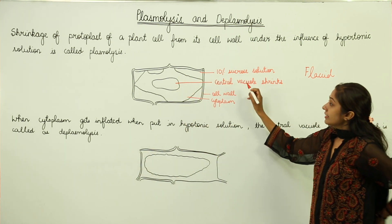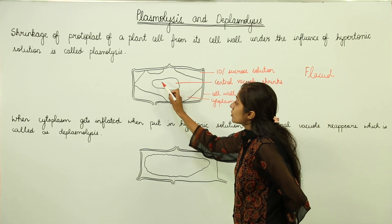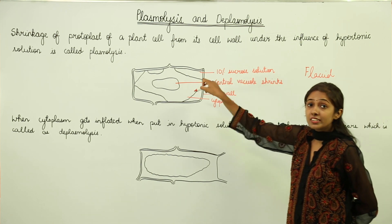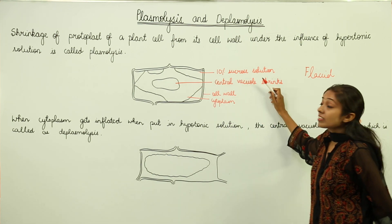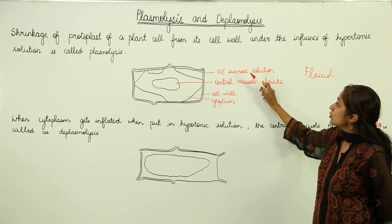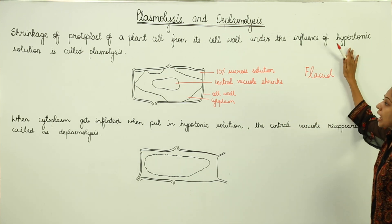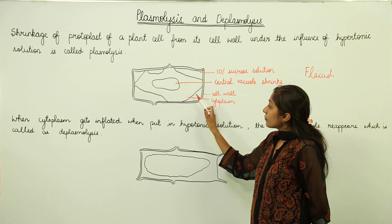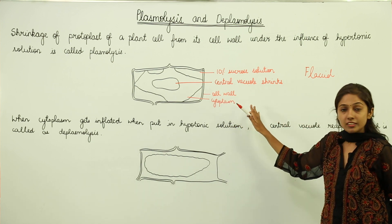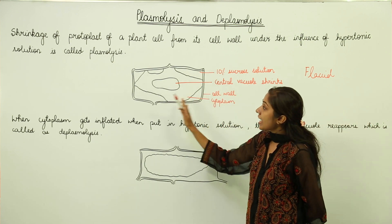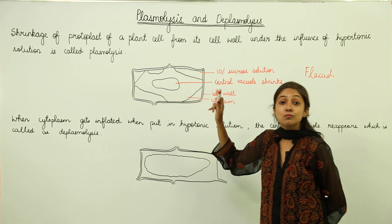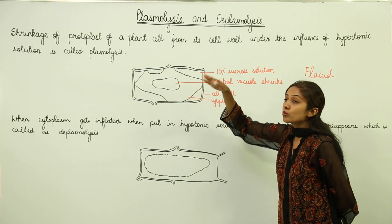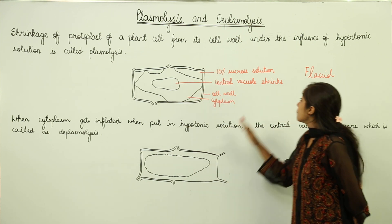You can see that the central vacuole has shrunk — the central vacuole shrinks because we have put this cell into a concentrated solution, for example a 10% sucrose solution, which is a hypertonic solution. The cell membrane along with the cytoplasm leaves the cell wall, causing shrinkage. This cell is known as a plasmolyzed cell or a flaccid cell, and this phenomenon is known as plasmolysis or flaccidity.